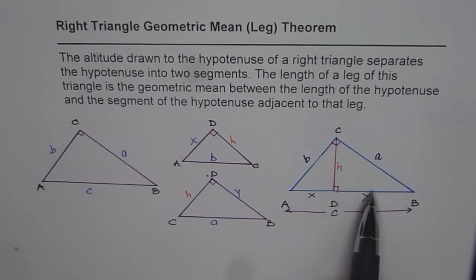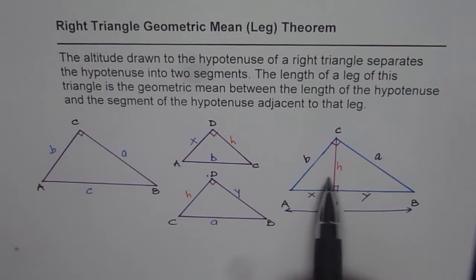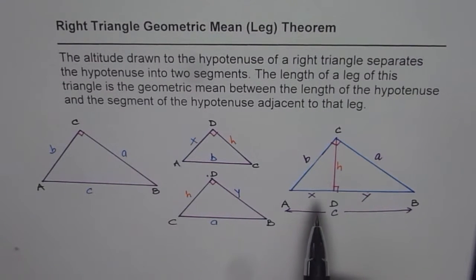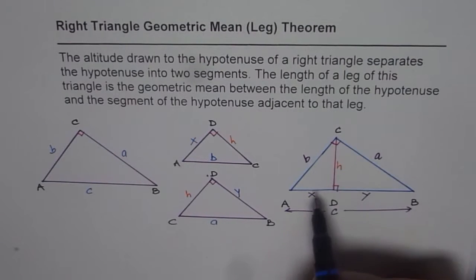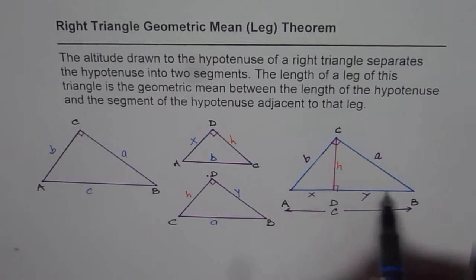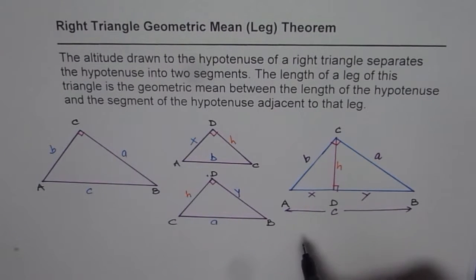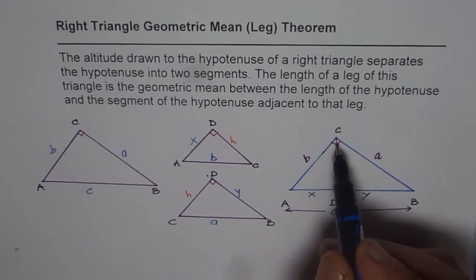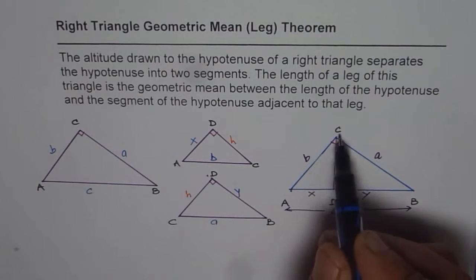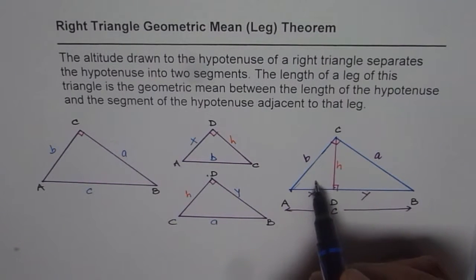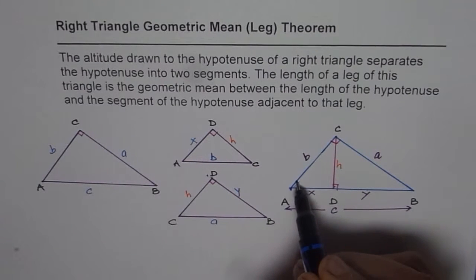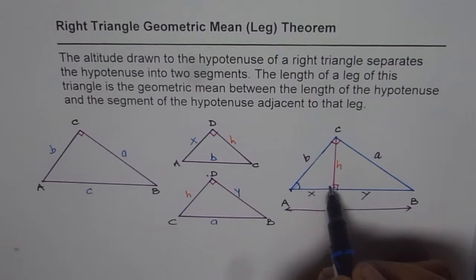We already had a video in which we showed that in this situation there are three similar triangles, and using those ratios we proved this theorem. Here we'll do it once again. When we drop a perpendicular — which is the altitude for the big triangle — it divides the hypotenuse into two segments; let them be x and y. If you consider the big triangle ACB and the small triangle ACD, these two triangles are similar since both have one common angle and both have a 90-degree angle.